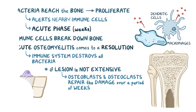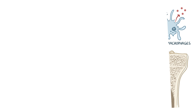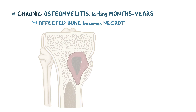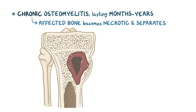However, in some cases the process turns into chronic osteomyelitis, lasting months to years. In that situation, the affected bone sometimes becomes necrotic and separates from the healthy part of the bone — that's called a sequestrum. At the same time, the osteoblasts that originate from the periosteum may form new bone that wraps the sequestrum in place, and this is called an involucrum.